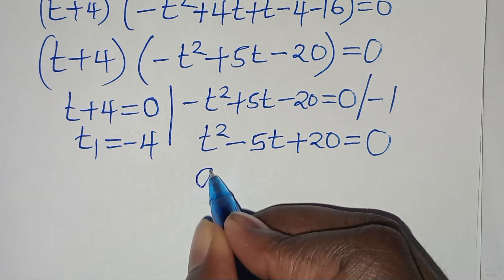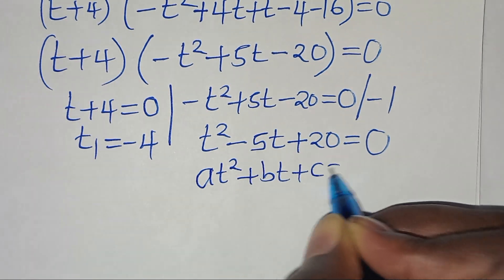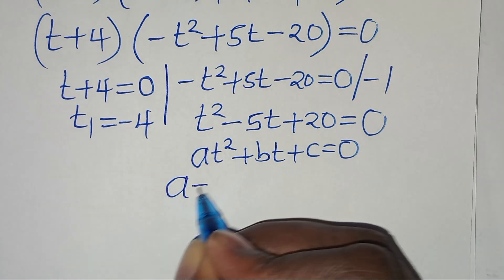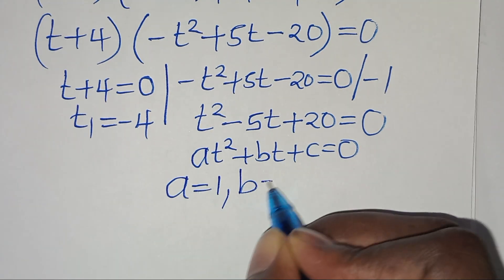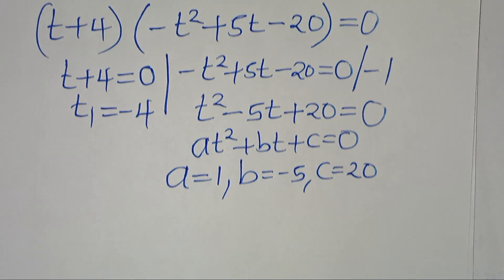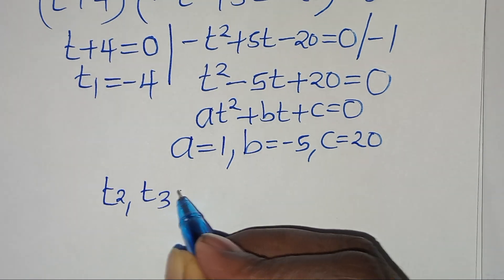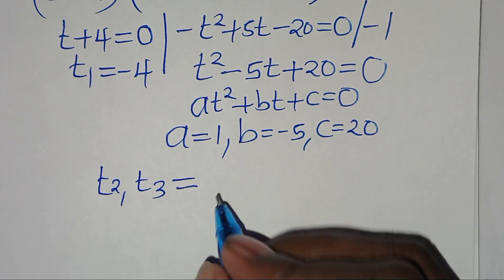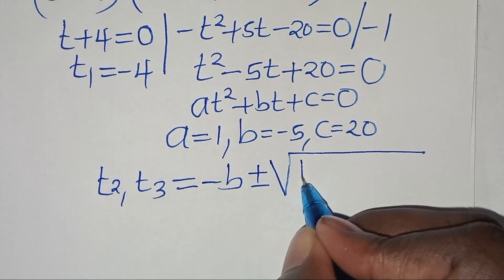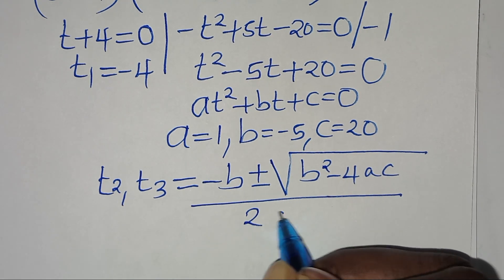This is a quadratic equation of the form at squared plus bt plus c equals 0, where a equals 1, b equals minus 5, and c equals 20. We can solve for t₂ and t₃ by applying the quadratic formula: t equals minus b plus or minus the square root of b squared minus 4ac, all divided by 2a.